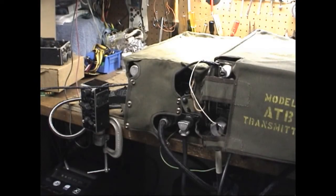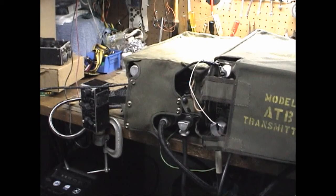We're going to look at the model ARB receiver and the model ATP transmitter in this video. Both are World War II vintage Navy aircraft radio equipment.